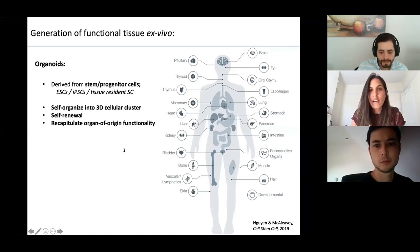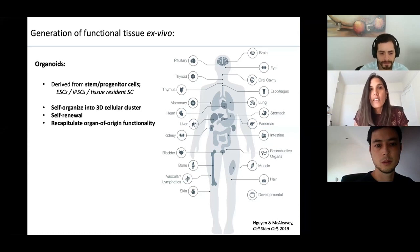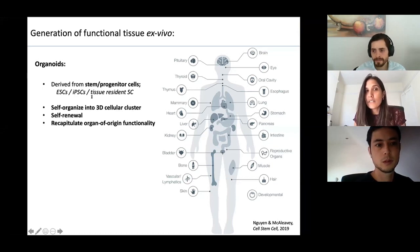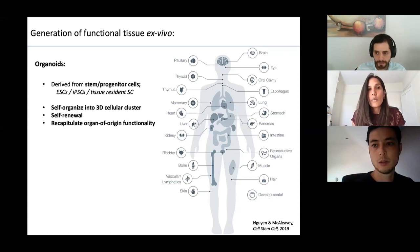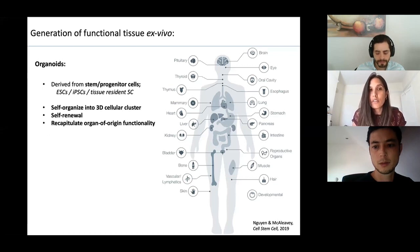Organoids are increasingly used by researchers now because they represent a more physiological in vitro model than traditional 2D cell cultures. They are derived from a variety of stem cell or progenitor cells including embryonic stem cells, induced pluripotent stem cells, or can be isolated from embryos or adult tissues. These progenitors are placed in culture media supplemented with specific growth factors which enable their self-organisation into 3D cell clusters, which can self-renew and recapitulate, at least to some extent, the organ of origin functionality.